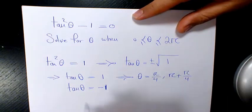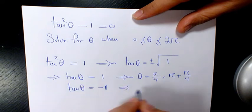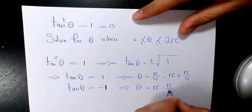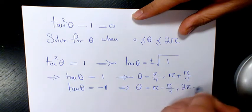going to be π + π/4. tan θ = -1 when θ is π - π/4 or 2π - π/4.